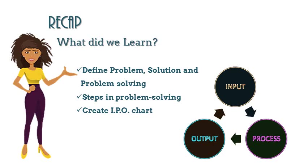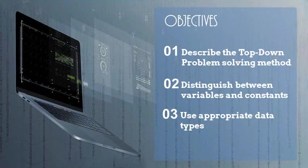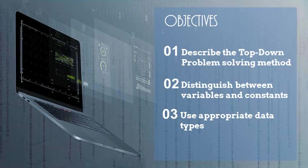We listed the steps in problem solving and were able to create what is called an IPO chart and these IPO charts break down the problem so we can see what will be our outcome. What are our objectives for this class? We want to be able to describe the top-down problem-solving method, distinguish between variables and constants, and use appropriate data types.